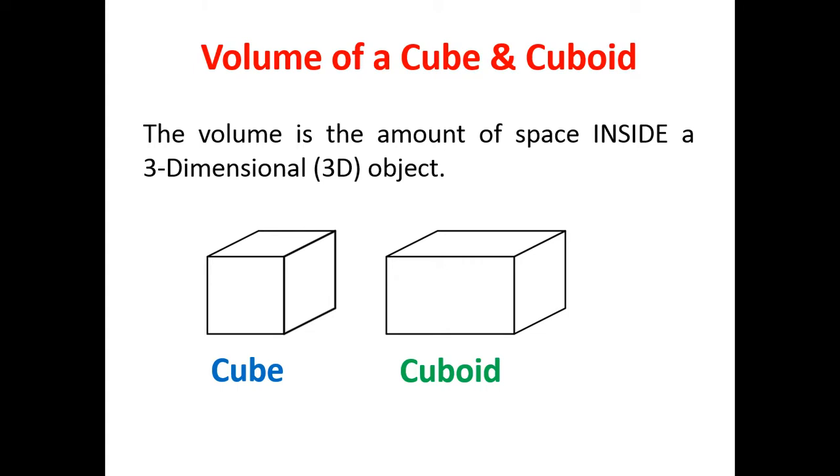A cube and a cuboid. A cube has all sides the same. A cuboid is like a box where all sides are not the same.